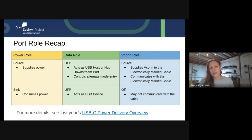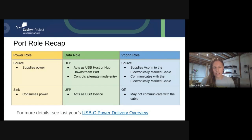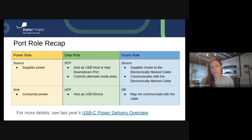Last up, we have the VConn role. You're either supplying VConn or you're not. VConn is that bit of power you give to electronically marked cables to allow them to do their special cable thing. The VConn source is the only one allowed to communicate with the electronically marked cable. So if you need to probe the cable for information or tell it to do anything, you have to be the VConn source. As a reminder, if you're using a Type-C connection with no power delivery, these roles are fixed for the lifetime of the connection once you've reached the attached state.